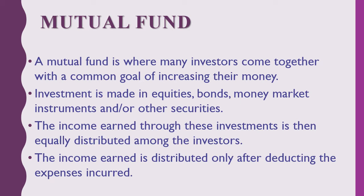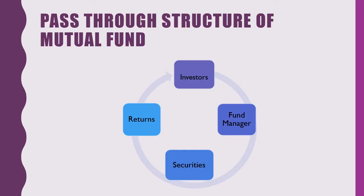Income earned through this investment is then equally distributed among the investors. The income is distributed only after deducting expenses incurred. This is the pass-through structure of mutual fund. Pass-through means whatever returns are generated in mutual fund investment, those returns are passed to the investors after deducting some expenses incurred.